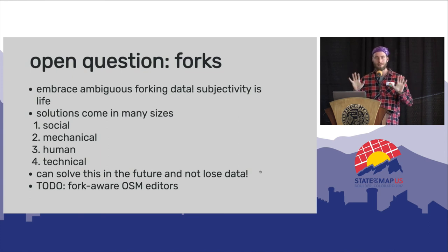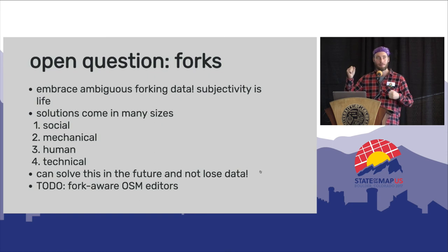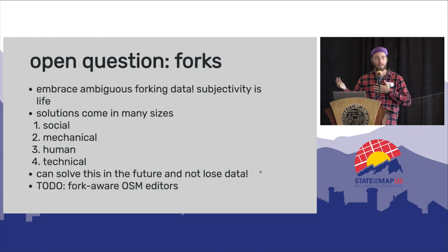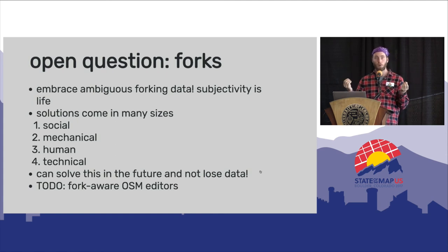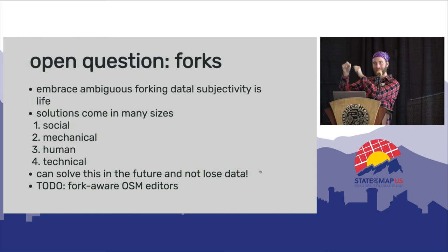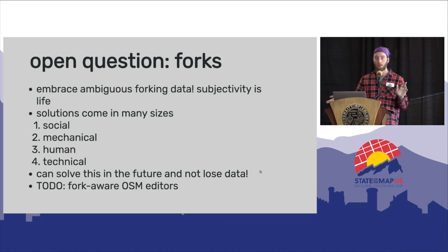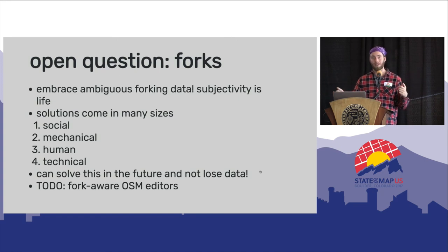Forking data is natural and ambiguity is natural — we want to embrace the subjectivity of the human experience. There are lots of possible solutions: social ones, like agreeing not to map the same area on the same day; mechanical solutions, like if I edit some tags and Gregor edits the longitude/latitude, those are safe to automatically merge without human intervention; human solutions, like seeing changes side by side and choosing one or the other; or more Git-like merge resolution where you have a three-way merge and can manually choose fields. The nice thing is that because the append-only log guarantees history is never lost, just because we show newest wins right now doesn't mean a new solution for forks in the future can't be layered on top with no data lost. We're excited about finding more solutions to this problem and making OSM editors aware of forks.